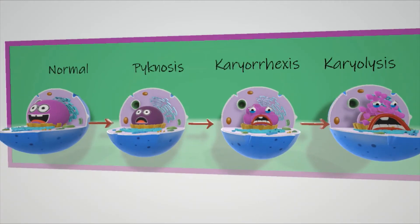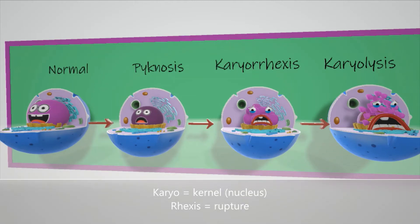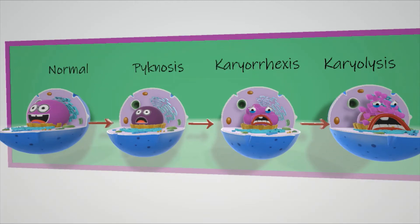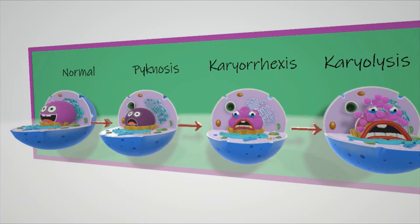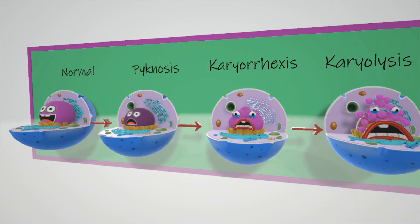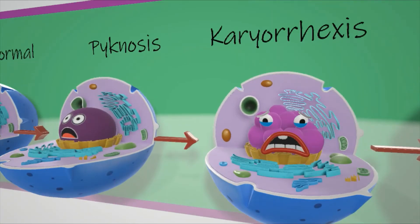Then there's karyorexis. 'Karyo' means kernel, which refers to the nucleus, and 'rexis' means rupture, because that's when the nucleus begins to rupture. As you see over here, the nucleus has begun to rupture.